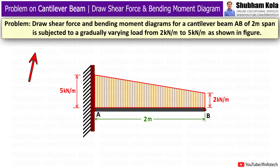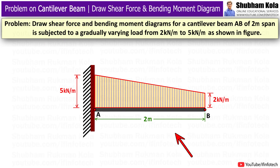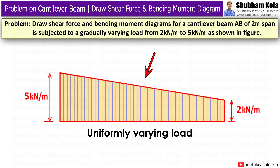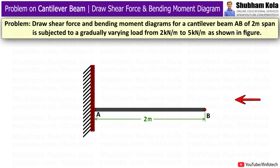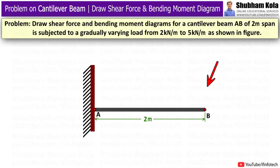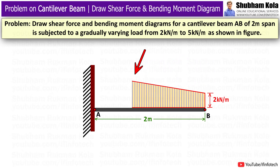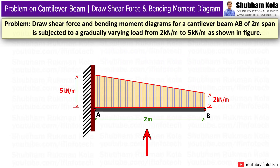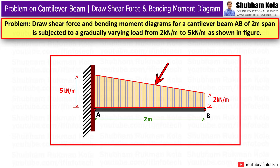In this video, we are going to learn how to draw a shear force diagram and bending moment diagram for a cantilever beam subjected to uniformly varying load as shown in the figure. The uniformly varying load, also known as gradually varying load, is a type of load which is spread over a beam such that the rate of loading varies uniformly from point to point along the length of the beam. In today's lecture, we will solve a numerical problem based on this type of loading.